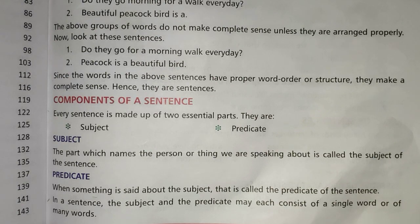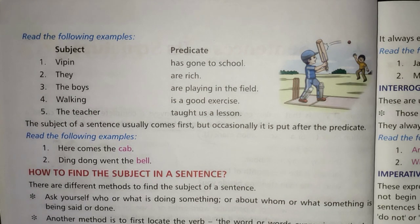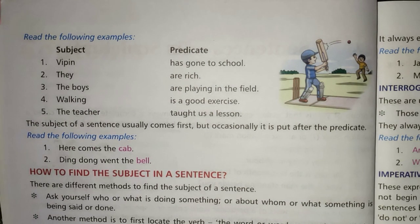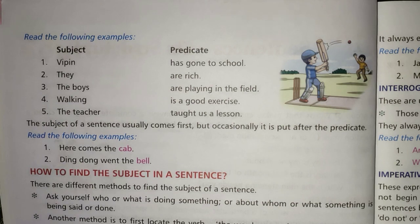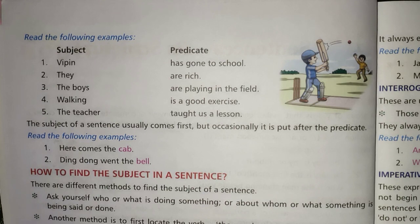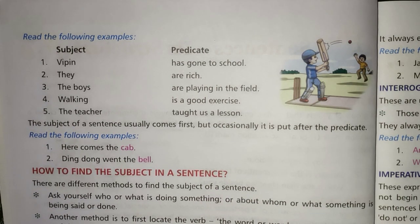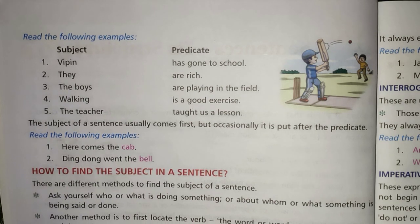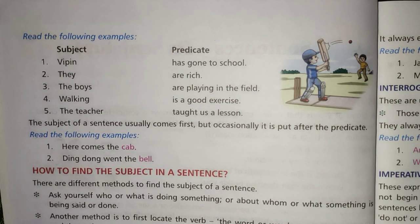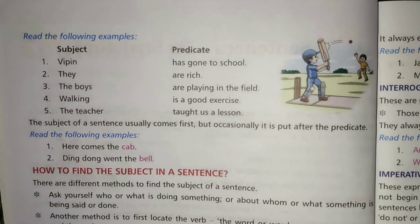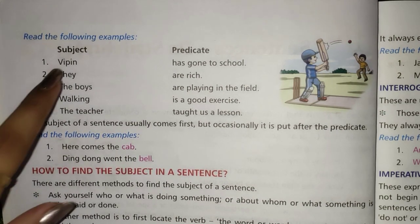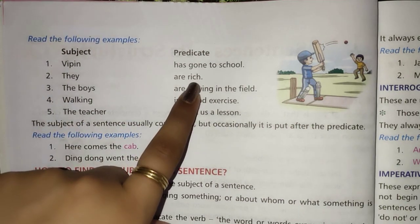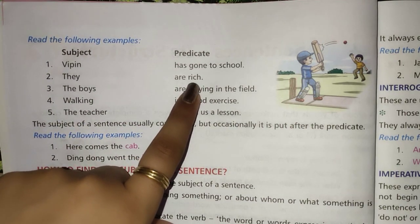So as you can see, students, here are a few examples. They are rich. In this sentence, 'They' is the subject and 'are rich' is the predicate.